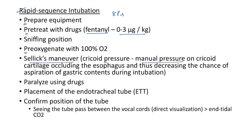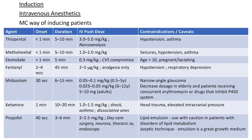Then we have to give pressure — that is, we use the Sellick maneuver to apply cricoid pressure. We give manual pressure on the cricoid cartilage to occlude the esophagus and decrease the chance of aspiration of gastric contents during intubation. The next steps are paralysis using drugs, placement of the endotracheal tube, and then we confirm the tube position — direct visualization seeing the tube pass between the vocal cords is preferred over end-tidal CO2.